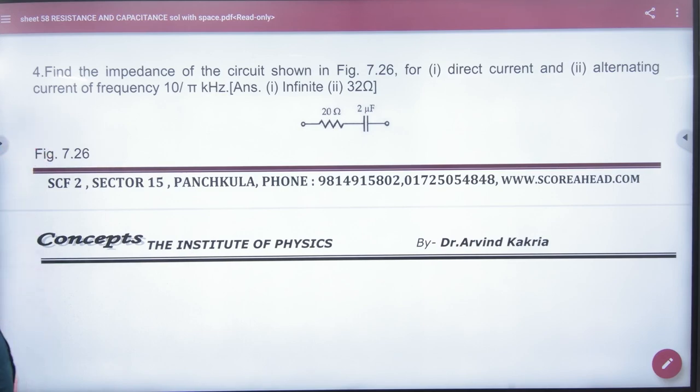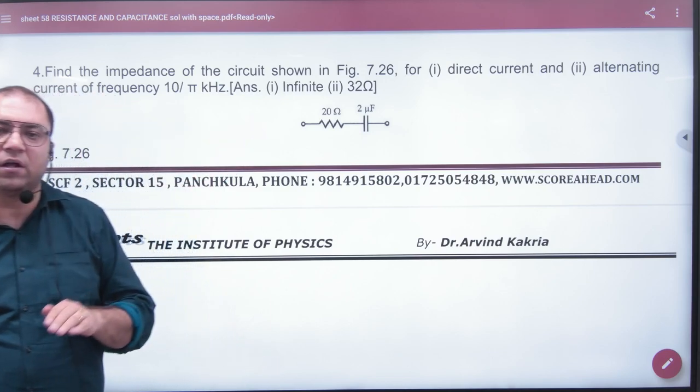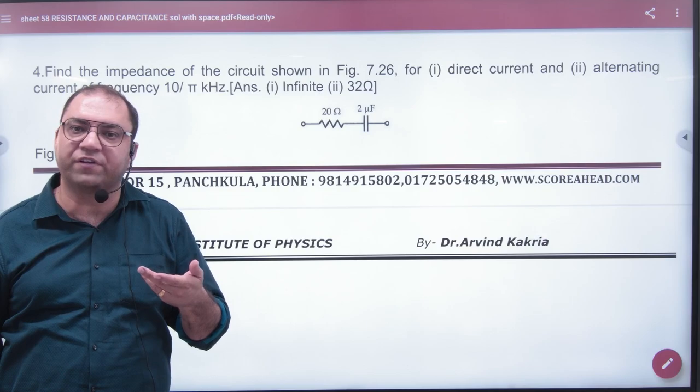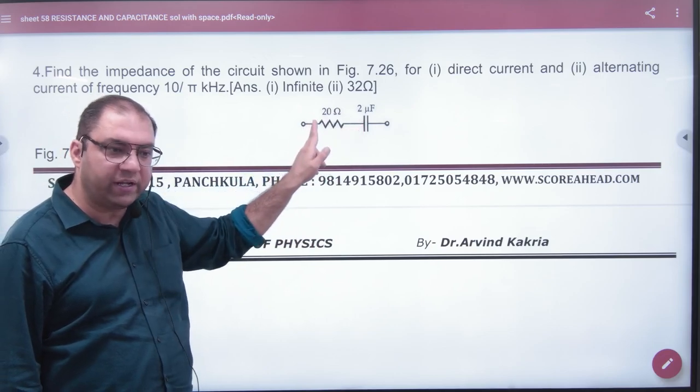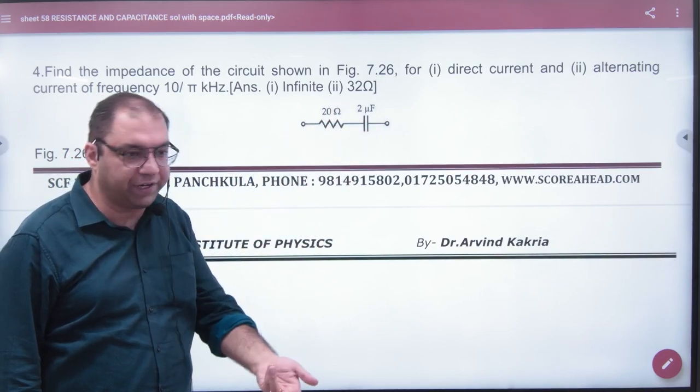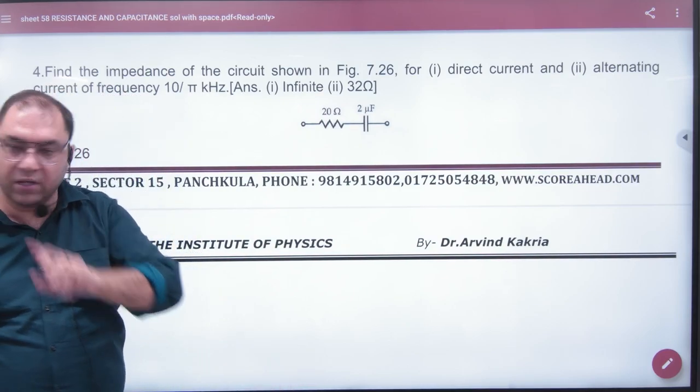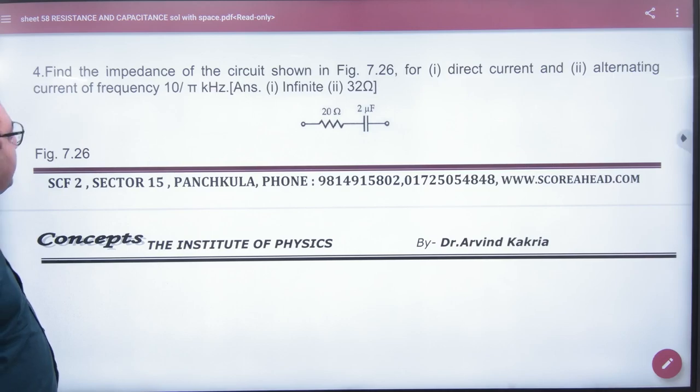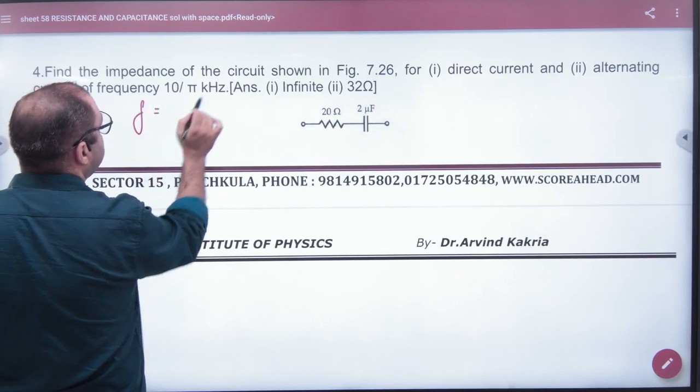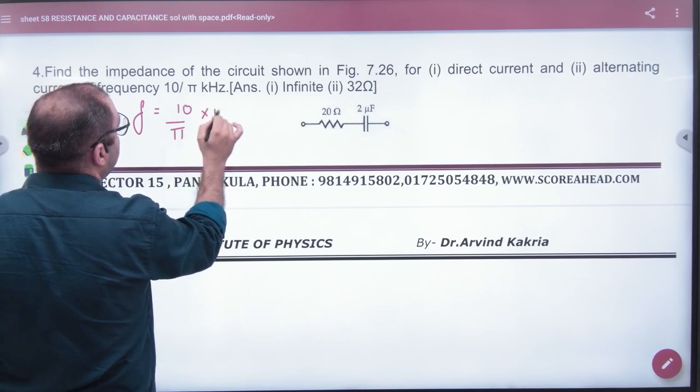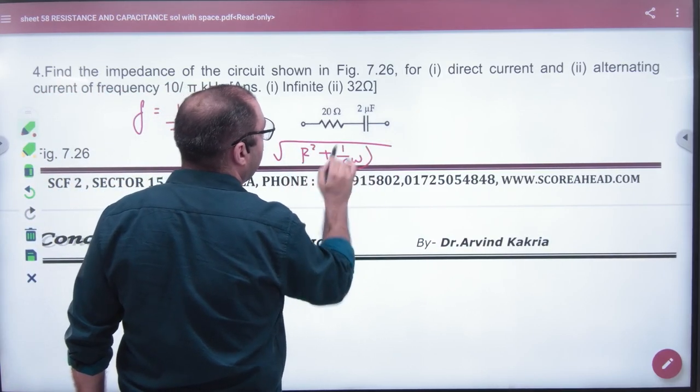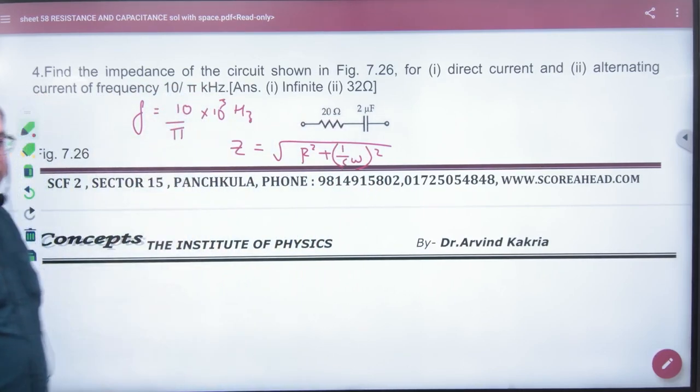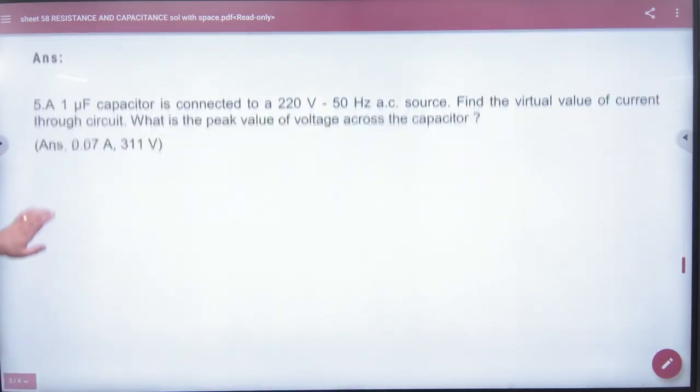Find the impedance of the circuit as shown for DC. DC current capacitor mein se pass hota hai nahi. Because DC current ke liye capacitor kitni resistance offer karta hai? Infinite. Infinite resistance hai. So if this is infinite resistance, this is 20, and in series infinity plus 20 is equal to infinity. So answer is infinity. First answer. Then for AC what happens? And in AC the frequency value is given in the question - frequency 10 upon pi kilohertz. This is the frequency. So impedance will be under root of R square plus 1 by C omega whole square. C is known, omega is known, R is known - answer.